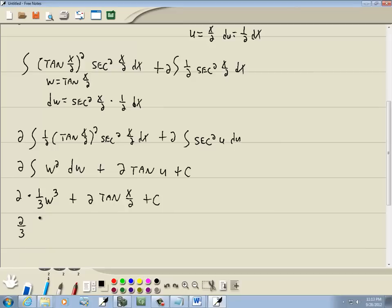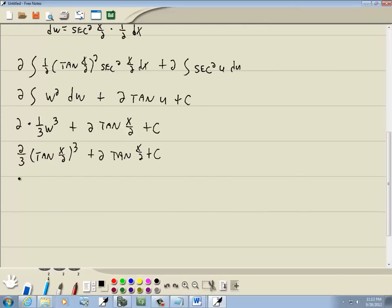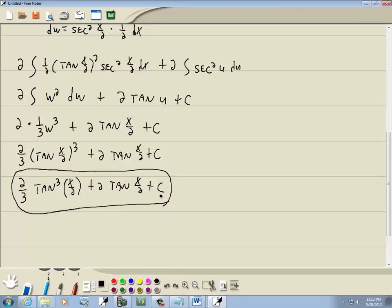And this becomes 2 thirds and w we said was this tangent up here. So I'll plug that back in. So tangent x over 2 to the third power plus 2 tangent x over 2 plus c, which gives us 2 thirds tangent cubed x over 2 plus 2 tangent x over 2 plus c. And that's our answer.